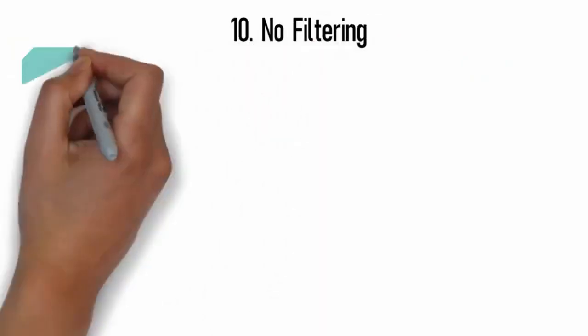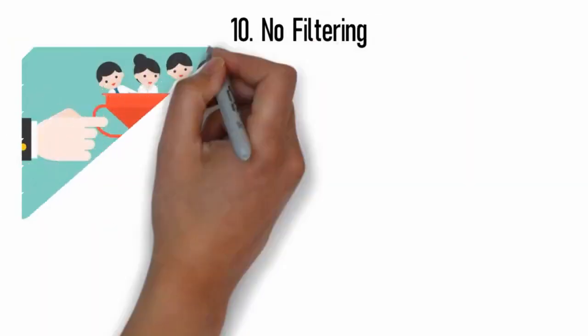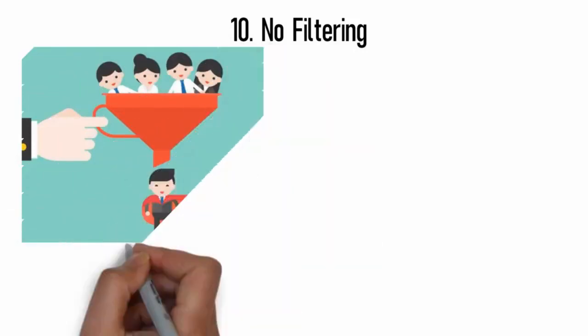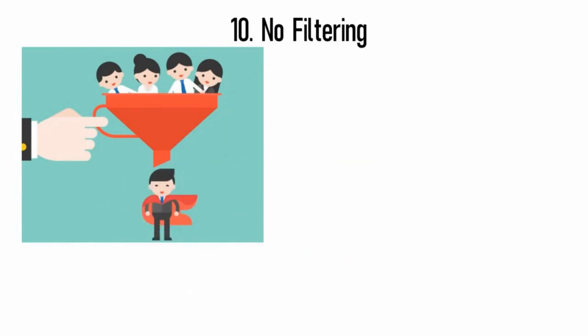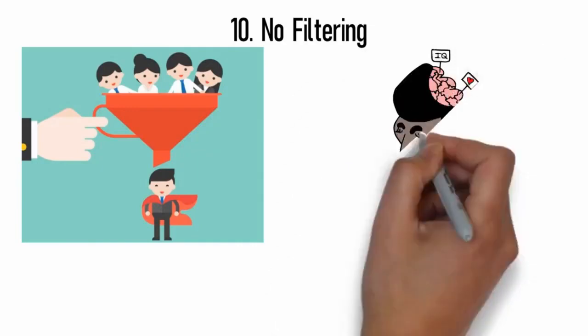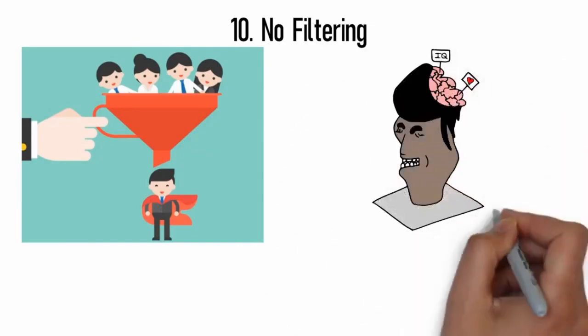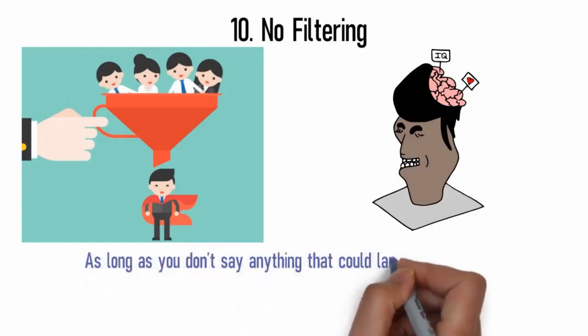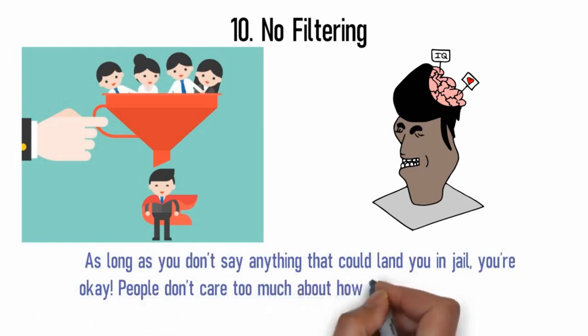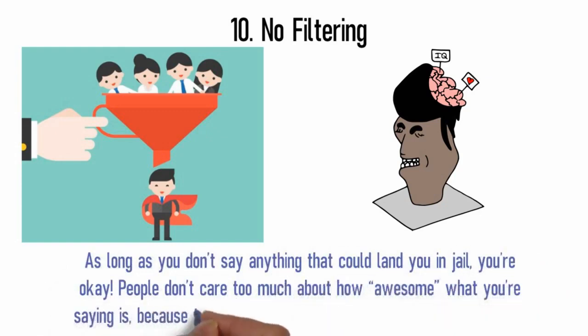10. No filtering. This is the reflex that allows you to say whatever goes on in your mind. No filtering, no checking with yourself would I sound cool if I say this, none of that. The best way to practice this is to start doing it with people you kind of know. Do you dare to try it? It's fun to realize that you're allowed to say whatever is on your mind, and no one is going to judge you for it. As long as you don't say anything that could land you in jail, you're okay. People don't care too much about how awesome what you're saying is because they're too focused on how they're coming across.